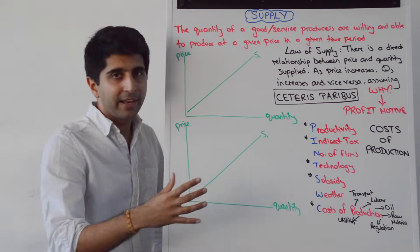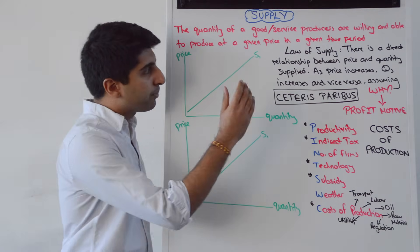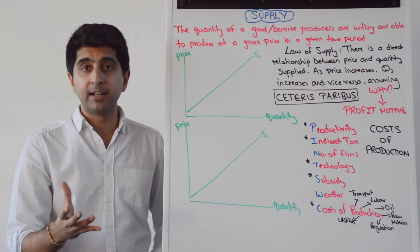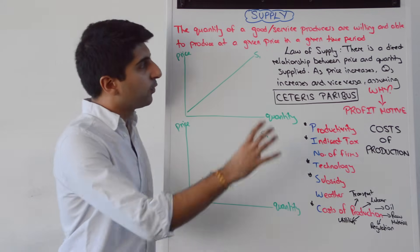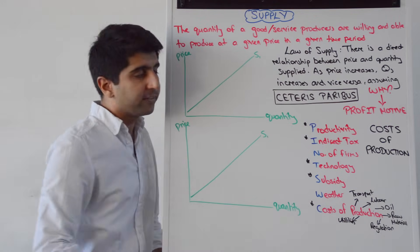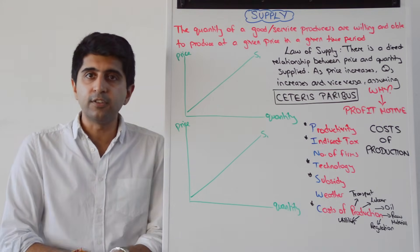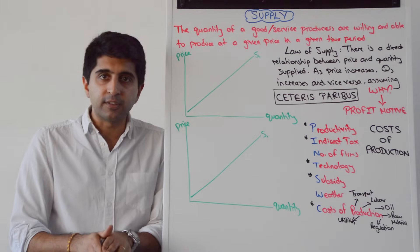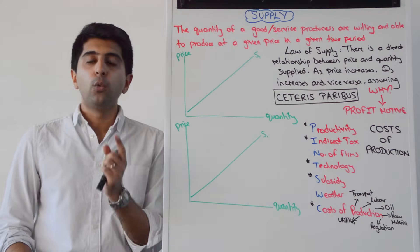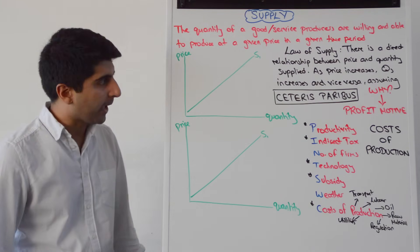The law of supply states that there is a direct relationship between price and quantity supplied — the opposite, basically, to our demand relationship. So a direct relationship between price and quantity supplied means that as the price increases, quantity supplied increases too. As the price decreases, quantity supplied decreases too. Whichever way price is going, quantity supplied goes exactly the same way.